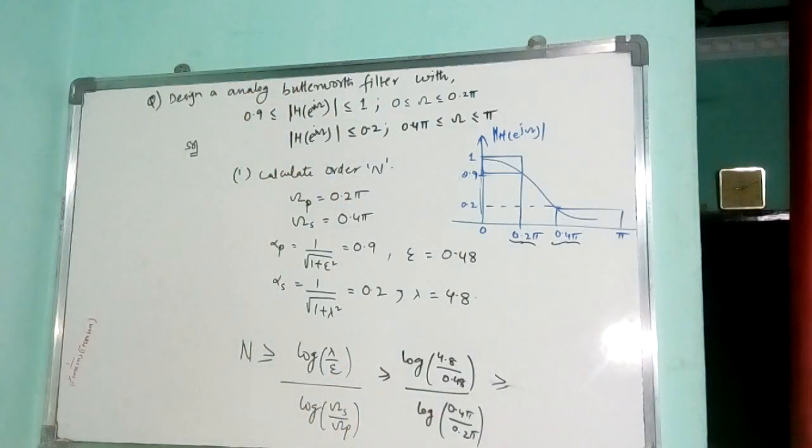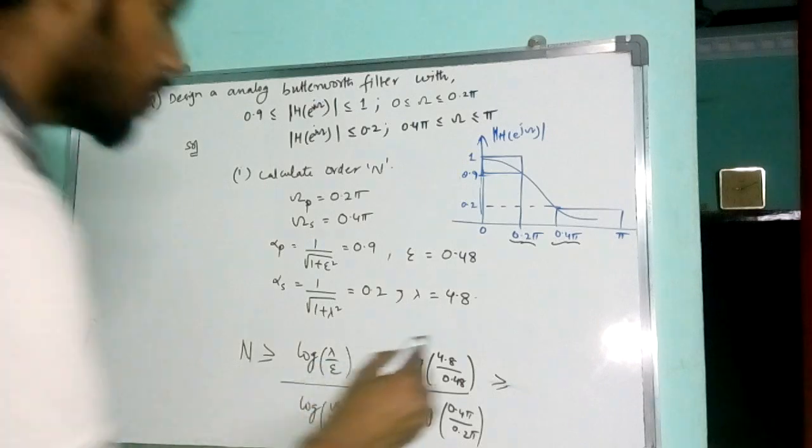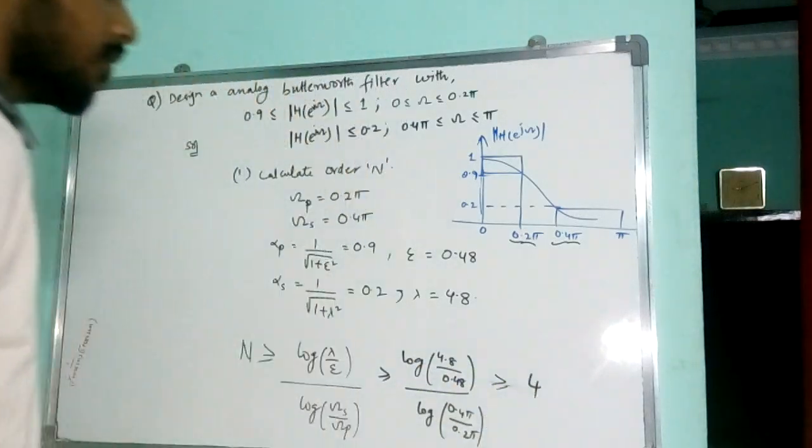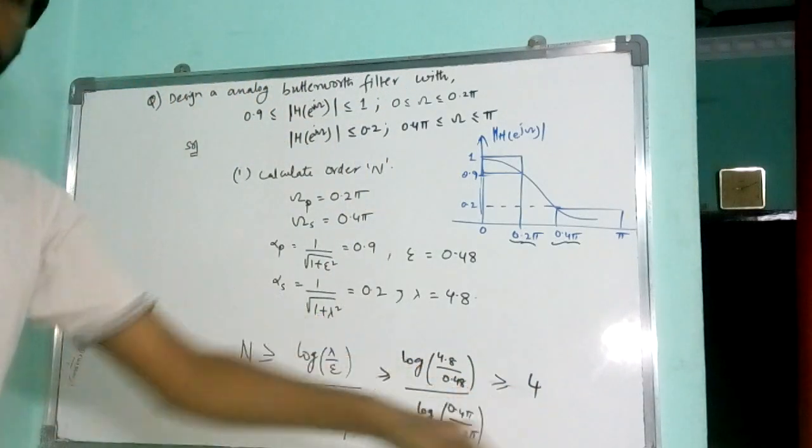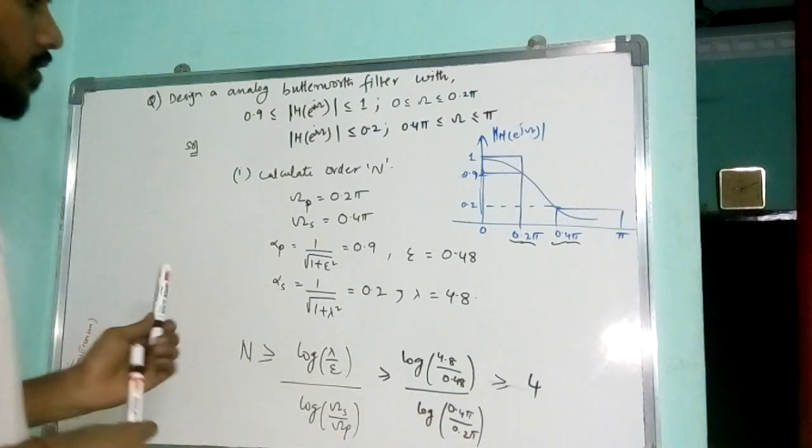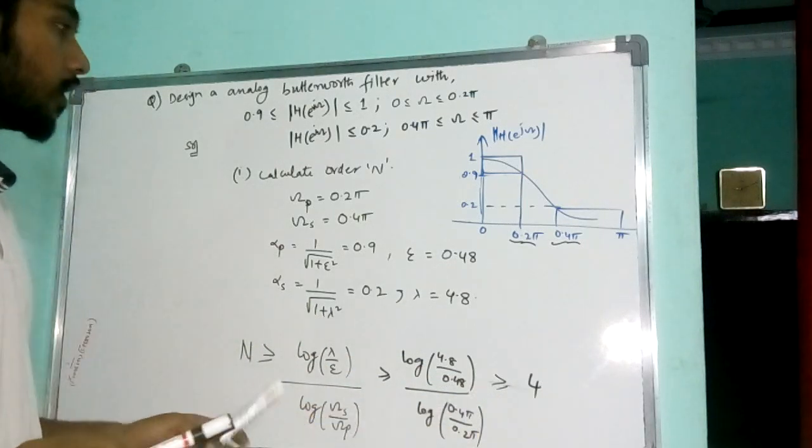This value turned out to be from three point something, and I rounded it up to 4. So my n value I got as 4.